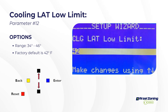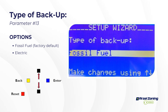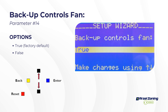The cooling low limit provides freeze protection for the coil — if plenum temperature dips below this value the compressor stages back, and if it stays below the compressor stages off. Type of backup heat: if set to fossil fuel, Y and W outputs cannot run simultaneously. If set to electric, W becomes an additional stage of Y — so first stage is Y1, second Y2, third W1, fourth W2.